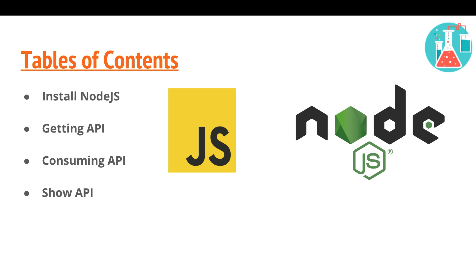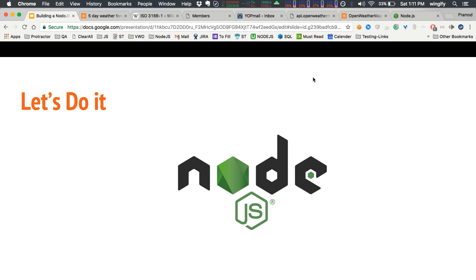We will use Node.js and get some API where we will get weather and production information. We'll consume this API and show the result at a particular endpoint. Let's start with the demo.